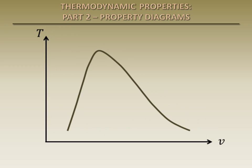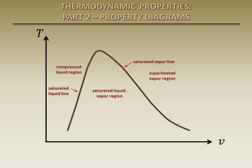On the left side of the dome is the compressed liquid region. Under the dome is the saturated liquid-vapor mixture region. And on the right side of the dome is the superheated vapor region. The line on the left of the critical point is the saturated liquid line, and the line on the right of the critical point is the saturated vapor line.